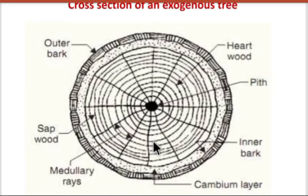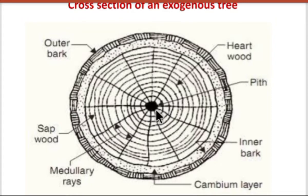The first part of this cross section of the tree is pith. This is the centermost part, which is in dark color. It is called as the pith or medulla, and it is the innermost part of the tree.